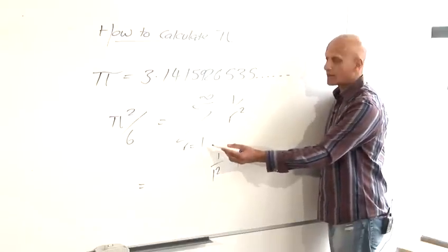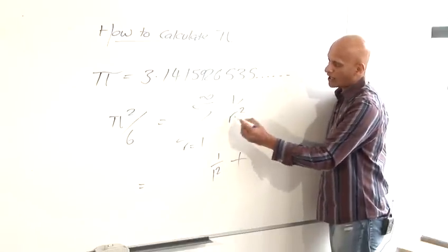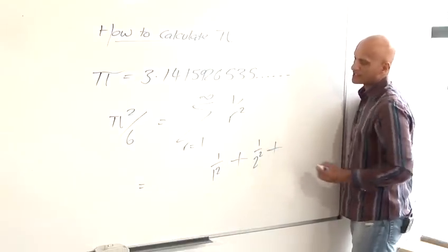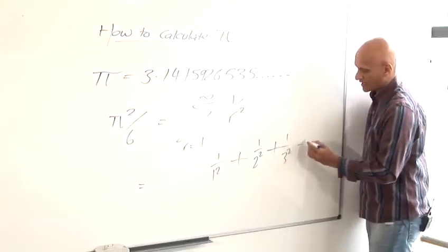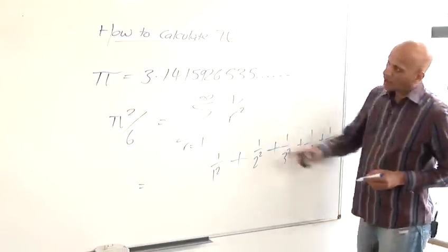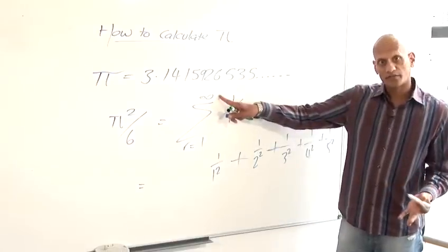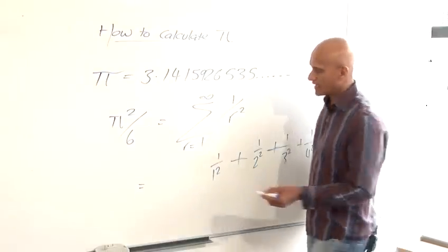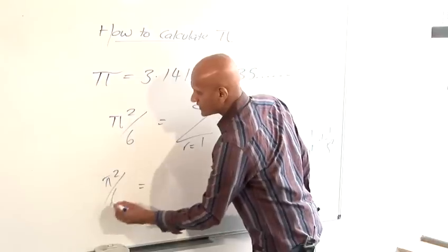And then the sigma means plus. And now we put the next number in, 2 into that equation. 1 over 2 squared. And then plus for the sigma. And then 1 over 3 squared and 1 over 4 squared and so on. You go on as far as you want. It goes up to infinity. So the further you go, the more accurate it will be. And that's equal to pi squared over 6.